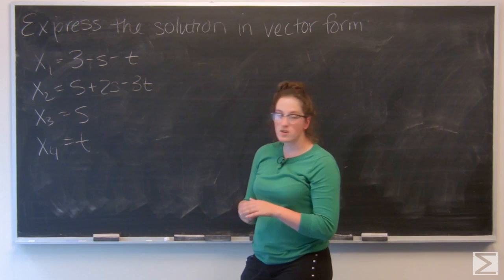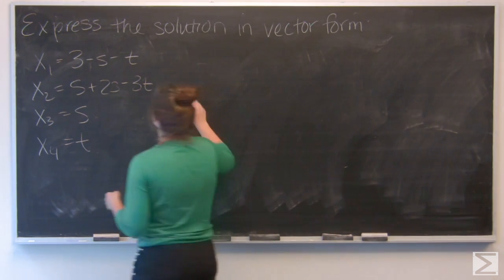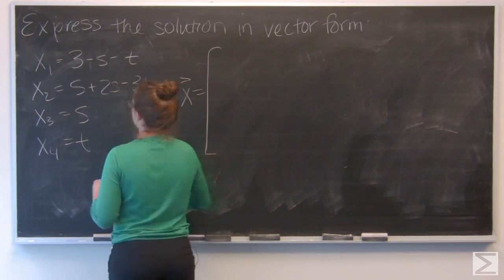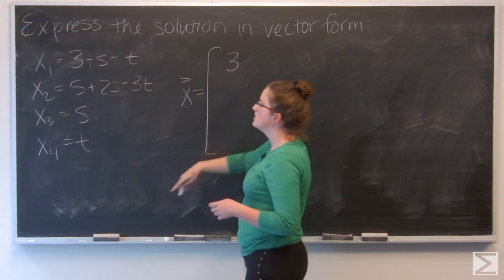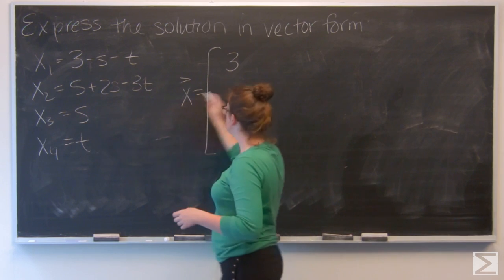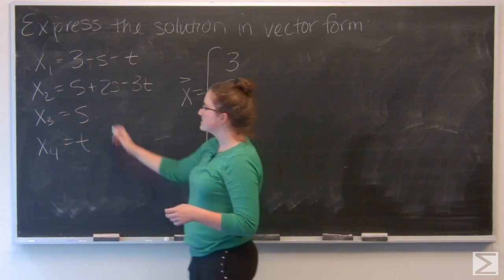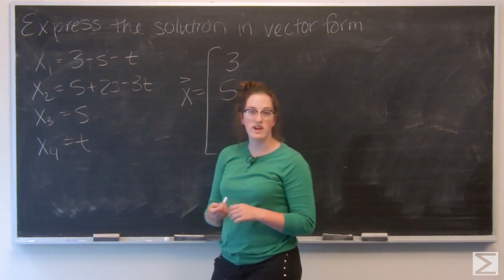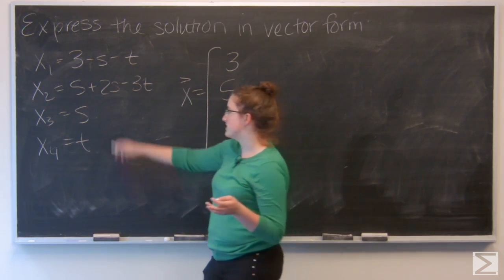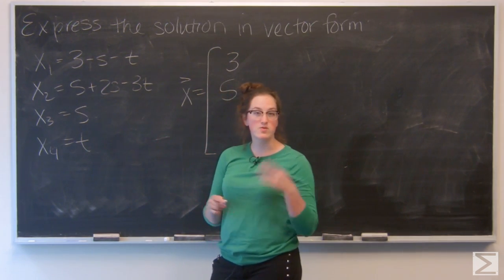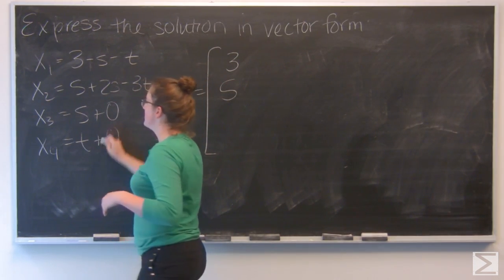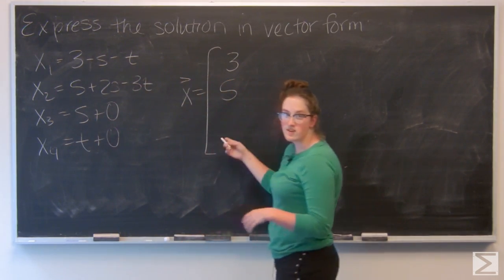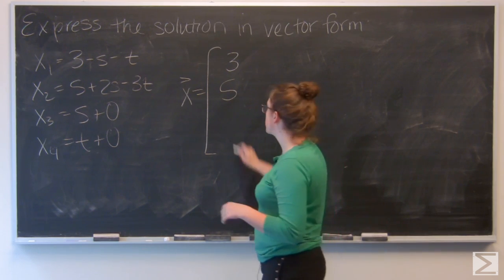So first, let's start by pulling out the constants. In x1, I have 3, so that's going to be on the top row. x2 has a 5 in it. And x3 and x4 both only have variables in it. x3 has s, x4 has t. So you can think about that as like s plus 0 and t plus 0. So for this constant vector, I'm just going to add zeros for the second two components.